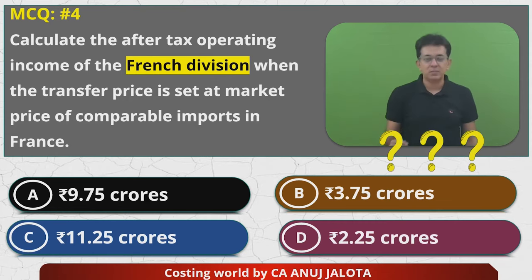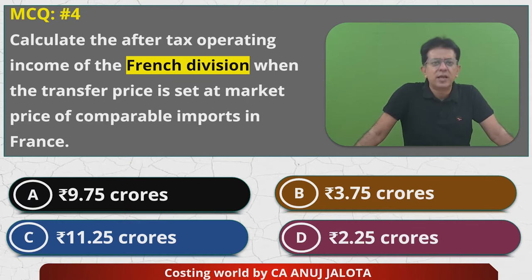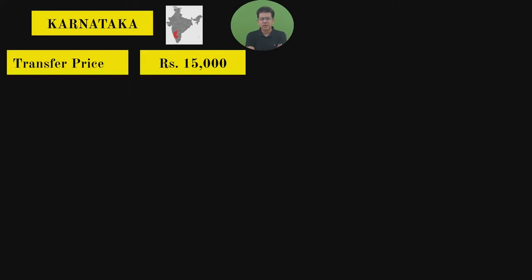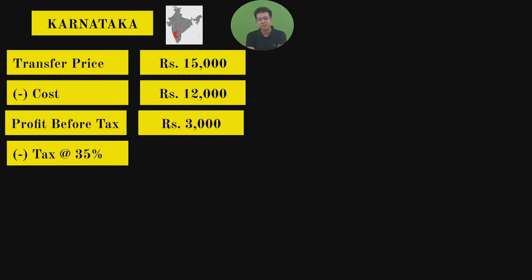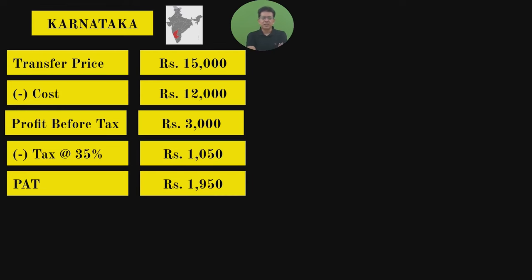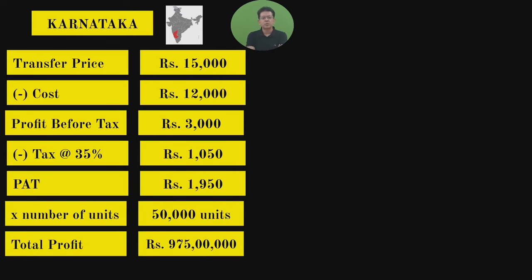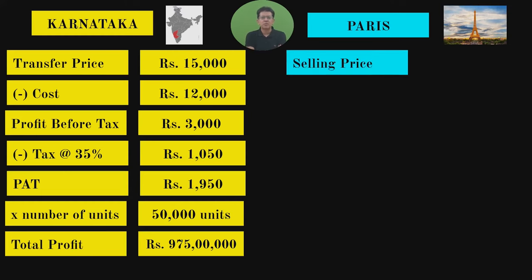For Karnataka with transfer price = ₹15,000: selling price = ₹15,000, cost = ₹12,000, profit before tax = ₹3,000. Less taxes at 35% = ₹1,050, so profit after tax per unit = ₹1,950. Multiply by 50,000 units: total profit after tax = ₹975 lakhs.